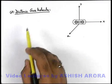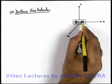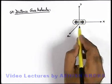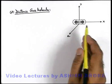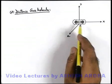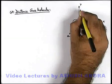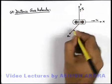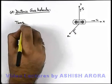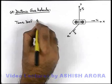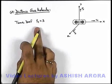Next is the diatomic gas molecule. In a diatomic gas molecule there are two atoms connected by a bond — this is the structure of diatomic gases like hydrogen, oxygen, or nitrogen. This molecule can also move in x, y, and z directions with translational velocities v-x, v-y, and v-z. So its translational degrees of freedom are always three; in fact, every gas molecule has three translational degrees of freedom.